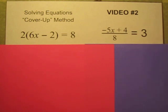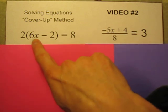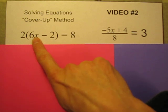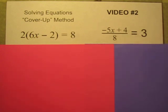In the cover-up method, you can do this with any equation that has just a single variable in it. What you do is you just cover up that chunk of the equation that has the variable in it, and it turns it into a much simpler equation.